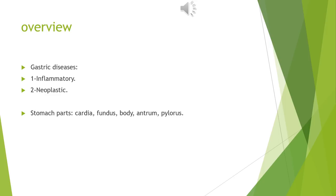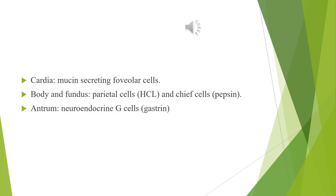Diseases of the stomach are subdivided into inflammatory and neoplastic conditions. Regarding histology, different areas of the stomach have different cellular populations and functions. In the cardia, the main cells are mucous-secreting foveolar cells, which are a very prominent component, and the thickness of the cardia mucosa is usually less than at other stomach sites.